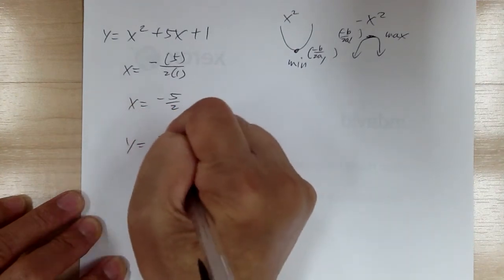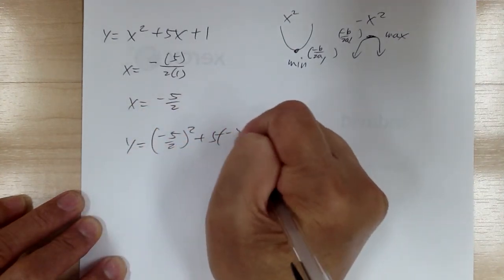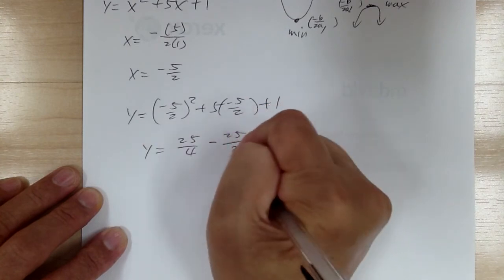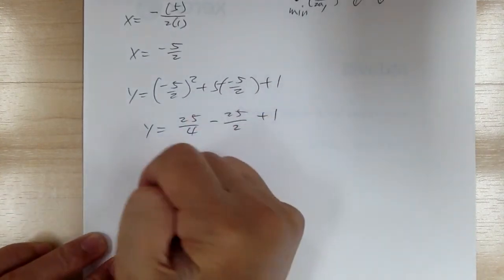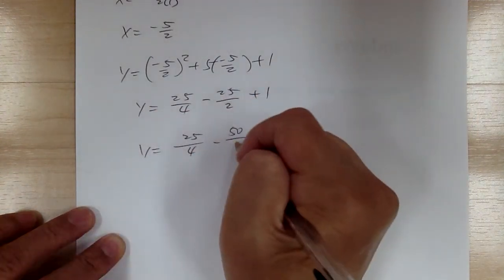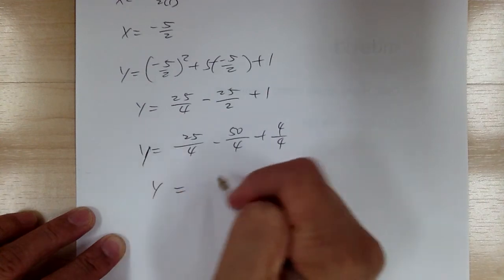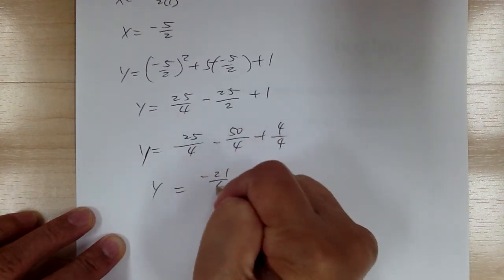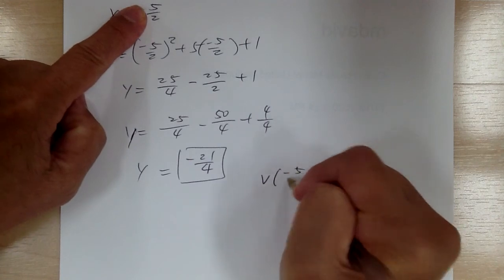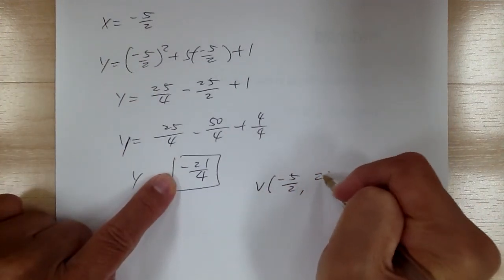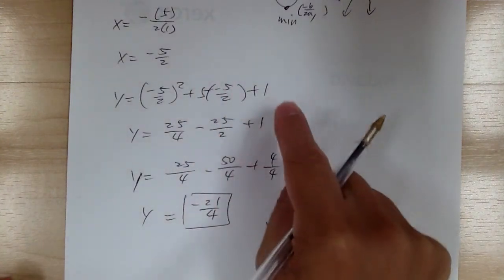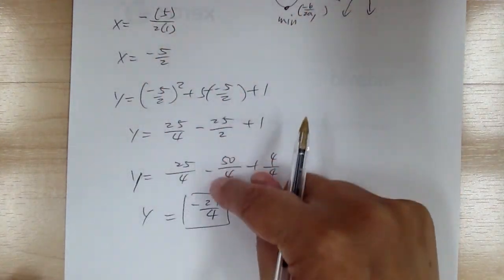Substituting x equals negative 5 over 2: y equals (negative 5 over 2) squared plus 5 times (negative 5 over 2) plus 1, which gives 25 over 4 minus 25 over 2 plus 1. Converting to a common denominator: 25 over 4 minus 50 over 4 plus 4 over 4 equals negative 21 over 4. So the vertex is (negative 5 over 2, negative 21 over 4). You can use completing the square or the negative b over 2a method — either way works.